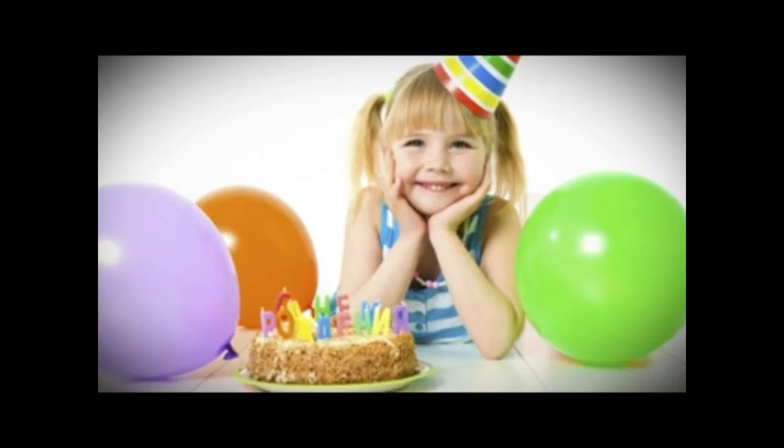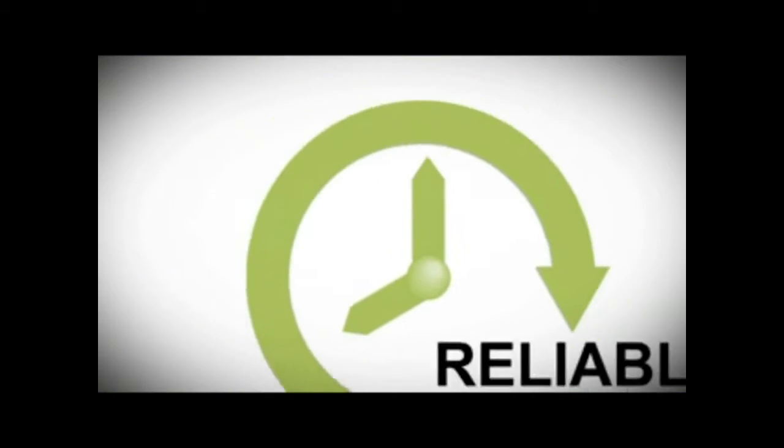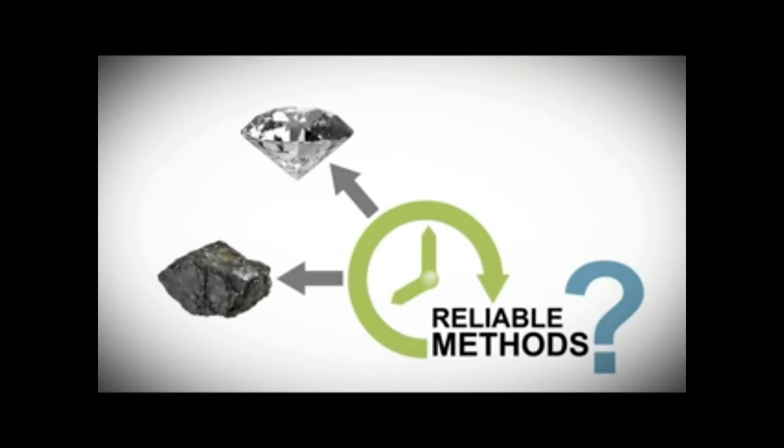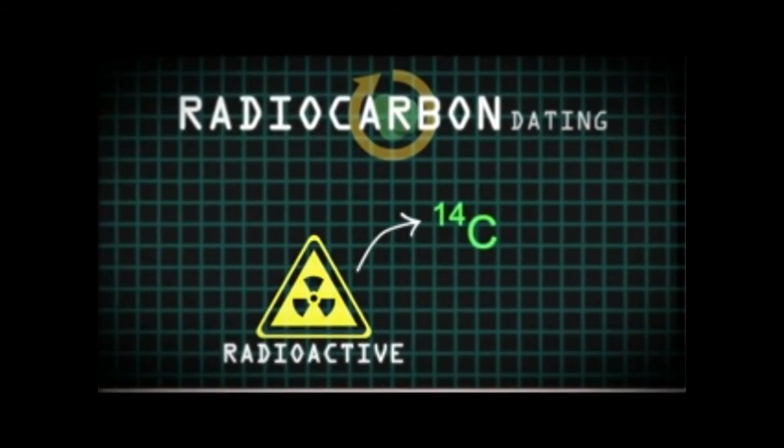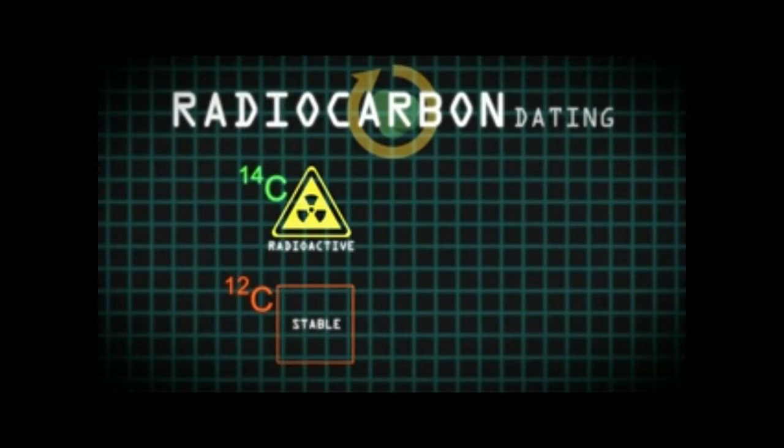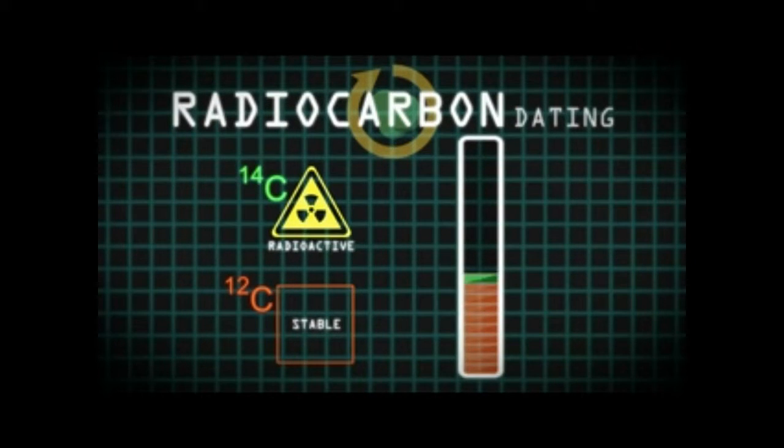Each year it's fun to celebrate birthdays, and to be certain of our age we can always check our birth certificate. But can any reliable methods determine the age of an object without a historical record? Radiocarbon dating measures the ratio of radioactive carbon-14 to stable carbon-12 in an organic artifact like wood or bone. The method assumes how much carbon-14 was present when the tree or animal died and how fast carbon-14 decays in order to calculate how old something is.